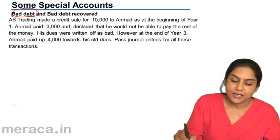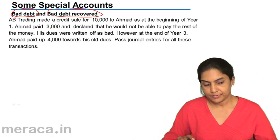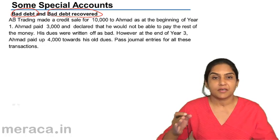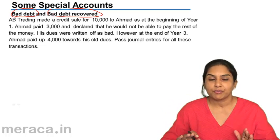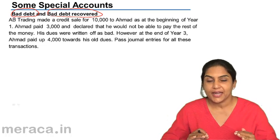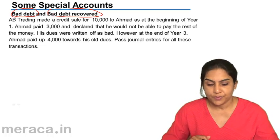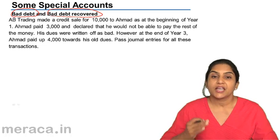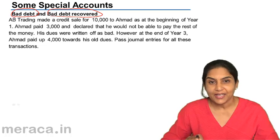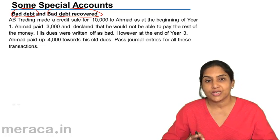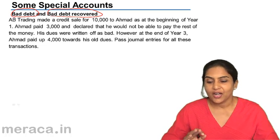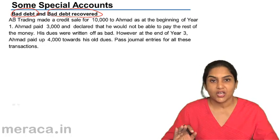One is bad debt and bad debt recovered. What is a bad debt? For example, the business makes a sale to a customer — in this case, Ahmad — a sale of 10,000. In our books, Ahmad is an asset, a receivable, a person who received our goods. His account has been debited, indicating a receivable of 10,000. Now, if for some reason Ahmad does not pay this money, he is not in a position to pay, or leaves the country without paying, and we know there is no way of collecting this amount from him, we should not show this in our books as an asset.